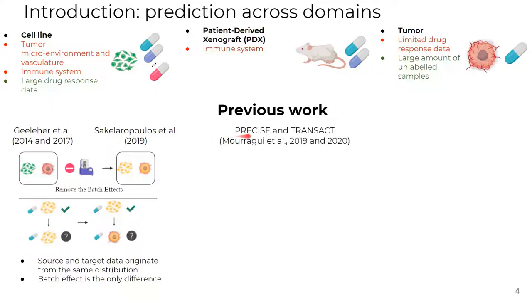Next, we have a family of domain adaptation methods. Here, we have the nice work of Mourragui, known as PRECISE, and its extension, TRANSACT. The goal is to find a shared feature space between datasets via a manifold alignment process, either using PCA, such as in PRECISE, or using a kernel PCA as in TRANSACT. In the end, a linear regression is trained using this learned projection.